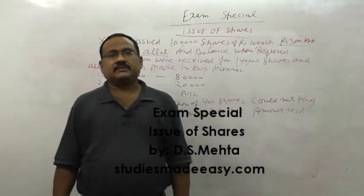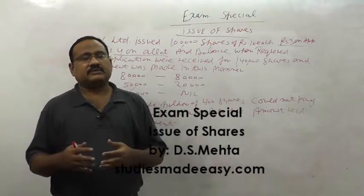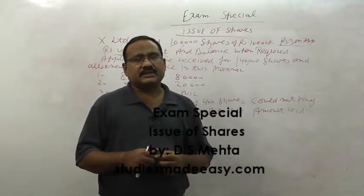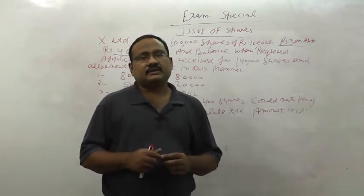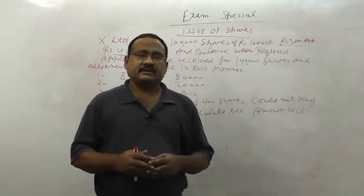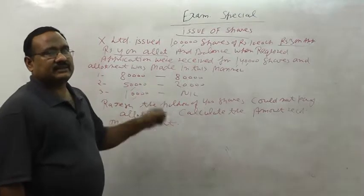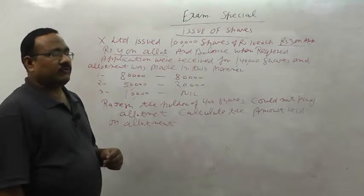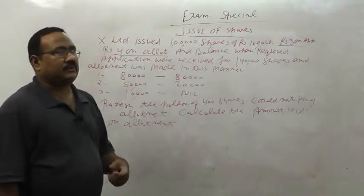The issue is about shares and the calculation of the amount received on allotment. X Limited issued 1 lakh shares of rupees 10 each. The application money was rupees 3, allotment was rupees 4, and balance on call when required. Applications were received for 1 lakh 40,000 shares and allotment was made as follows: 80,000 shares to the first category with 50,000 applications, 20,000 to the second, and 10,000 nil. Rajesh, the holder of 400 shares, could not pay allotment.